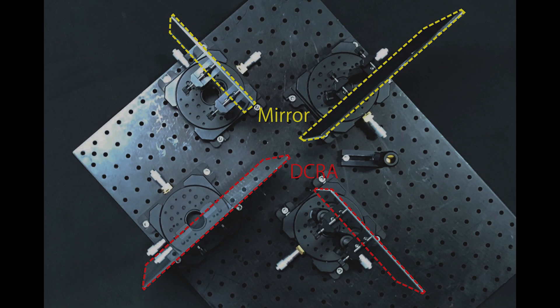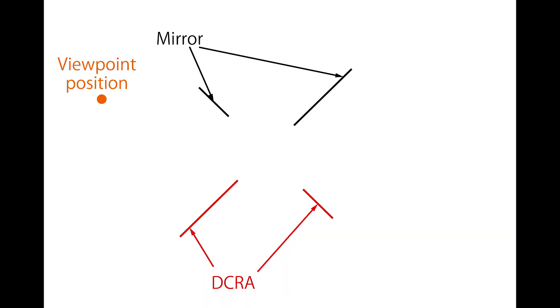We propose a computational design method for optical cloaking display via viewpoint transformation. The ray of light firstly reflects on the mirror when you see our device from the viewpoint position, and then it passes through to DCRA.